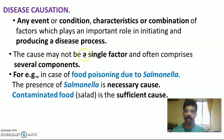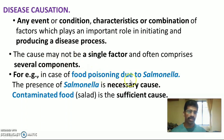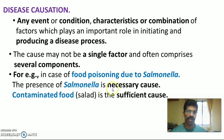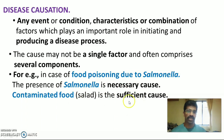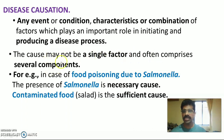Usually, a disease is caused not by a single factor — it often comprises several factors and components. For example, in the case of food poisoning most probably due to Salmonella, the presence of Salmonella is a necessary cause; without it, we may not have the disease. But the contaminated food — for example, a salad — is the sufficient cause. We need both necessary and sufficient causes to produce a disease. So, the cause of a disease often comprises several components.